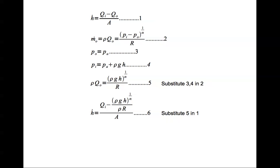And finally substituting 5 in 1, I can write H dot equal to QI minus rho GH to the power of 1 divided by alpha divided by rho R divided by A. Notice that this is a nonlinear dynamic equation. When alpha equal to 1, this becomes a linear equation. For all other values of alpha, this is a nonlinear equation.